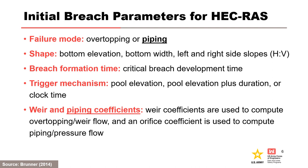The HEC-RAS software requires the user to enter the following information to describe a breach. The user will identify a piping failure mode for internal erosion and specify a piping coefficient used to compute piping slash pressure flow. The user will also specify the breach dimensions, critical breach development time, and trigger elevation.